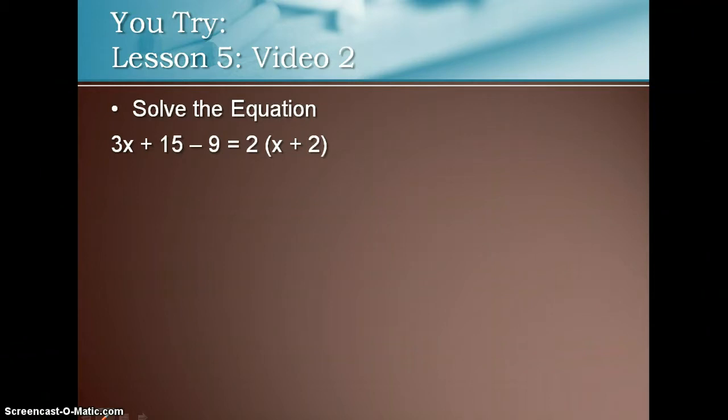So the U-try says 3x plus 15 minus 9 is equal to 2 times the quantity x plus 2. If you can't solve it, continue watching.